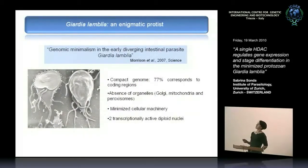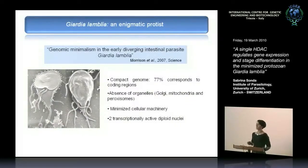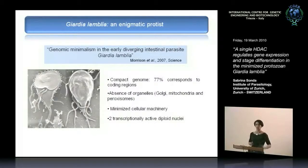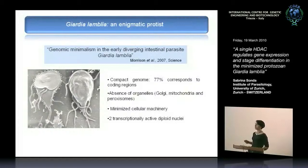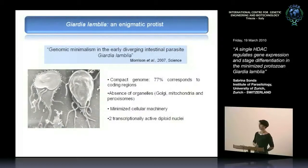The next slide takes its title from a recent work published in 2007 describing the complete sequencing of the parasite's genome. Again, despite being basal and simple, this parasite was called enigmatic. What clearly emerged from this work is that minimalism and economy are a trademark of Giardia. This economy is found not only at the DNA level — the genome is highly compact, with the majority corresponding to coding regions and very little junk DNA — but also at the level of organelles. Many organelles typical of eukaryotic cells are not found in this parasite, including the Golgi apparatus, mitochondria, and peroxisomes.